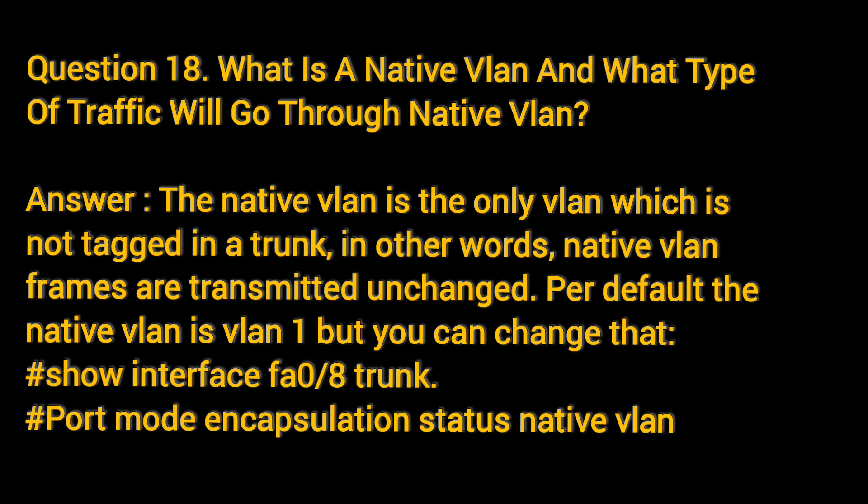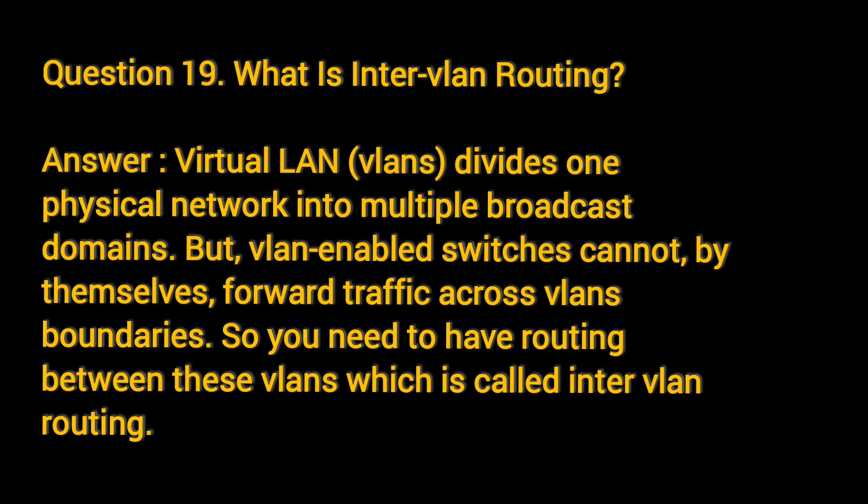Question 18: What is a native VLAN and what type of traffic will go through native VLAN? The native VLAN is the only VLAN which is not tagged in a trunk. In other words, native VLAN frames are transmitted unchanged. By default, the native VLAN is VLAN 1, but you can change that. Use: show interface fa0/8 trunk to verify port mode, encapsulation, status, and native VLAN.